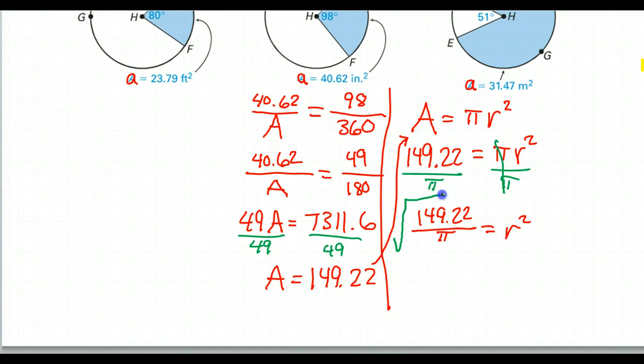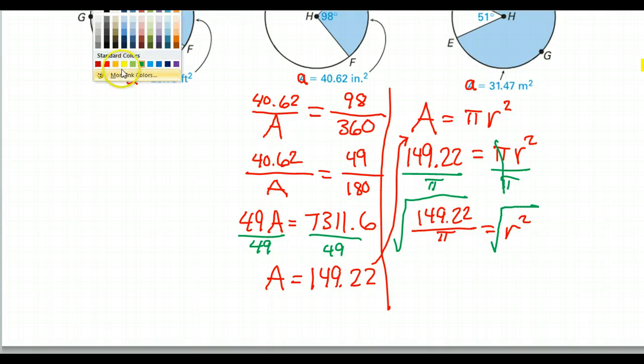So now I have 149.22 over pi is equal to r squared. But then I need to take the square root of both sides to get r by itself. So that's going to give me that the radius is, let's see, square root of 149.22 over pi.